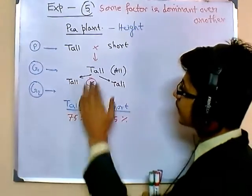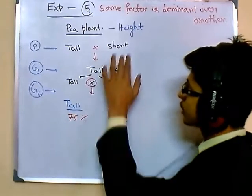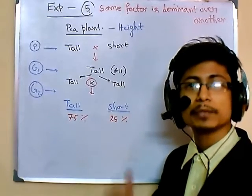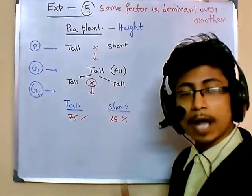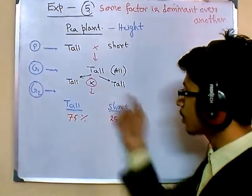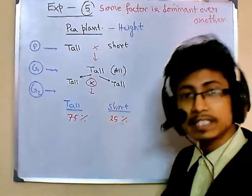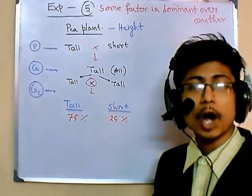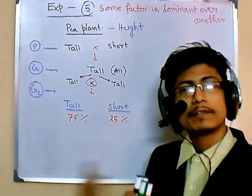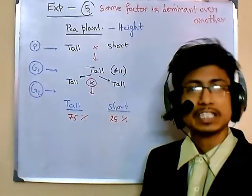These results puzzled Gregor Mendel. When he crossed a tall and short plant and got all tall plants, he thought the short character was gone — apparently lost during the cross. But after self-fertilization in generation one, the short plants started to arise again. That means the short factor is not lost; it was there but not expressing. So there is a matter of expression of the factor — the factor not only has different versions or varieties, but it varies in expression.